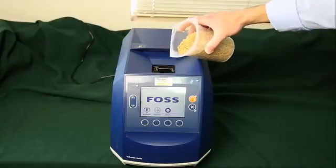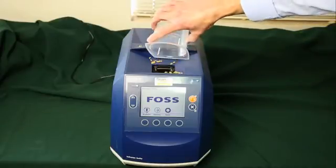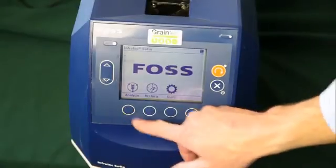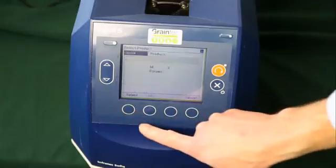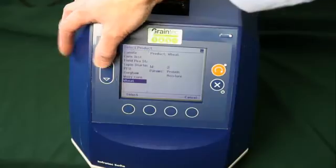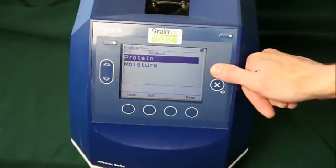We just pour in our sample. The sample is about 400 ml. We choose our grain from the menu. In this case we're going to measure wheat, and then we just press the measure button.